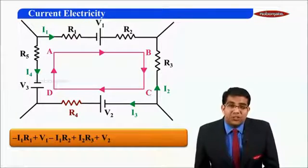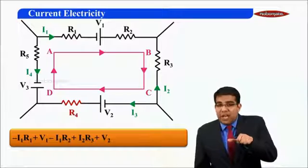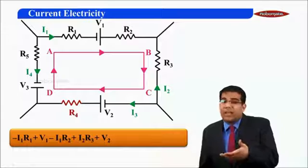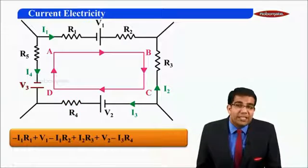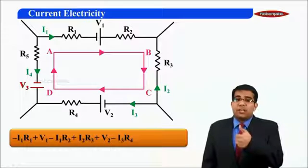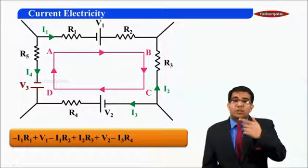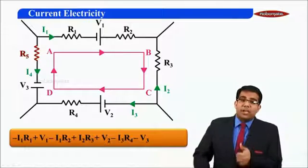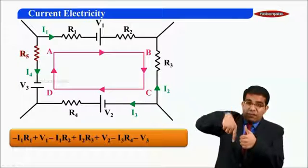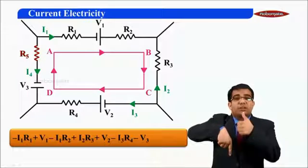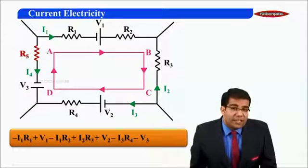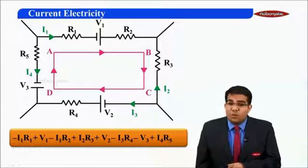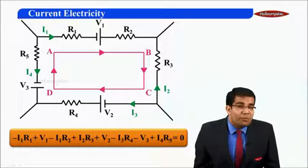Passing through resistance R4, current I3 is flowing through it and I am moving in the direction of current, so I will have a loss: minus I3 R4. Now moving from D to A, I am going from the positive terminal of the battery towards the negative terminal, so I will have a loss of minus V3. Finally, moving from D to A in the upward direction, current I4 is coming downward through resistance R5 — I am moving opposite to the direction of current, so I will have a gain of plus I4 R5. This is the total potential drop inside the loop, and Kirchhoff's voltage law states that this total potential drop is equal to zero.